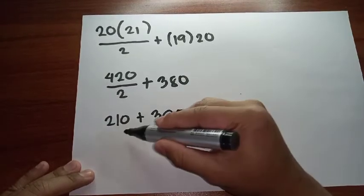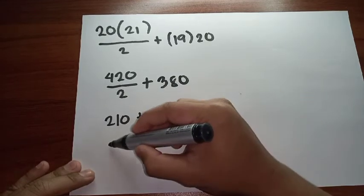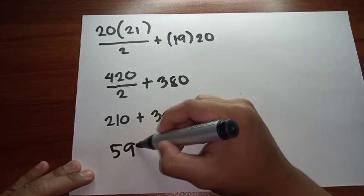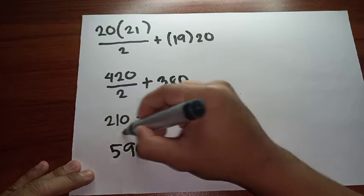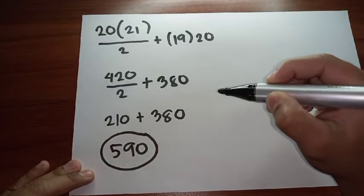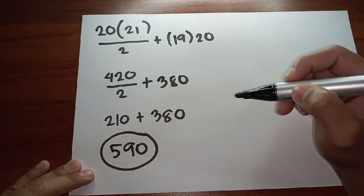210 plus 380 is equal to 590. Therefore, the 20th pentagonal number is 590.